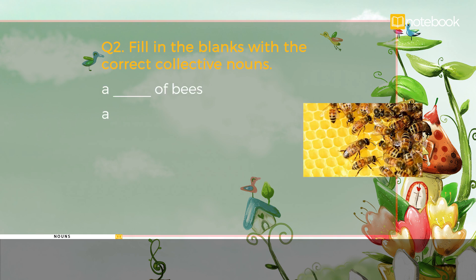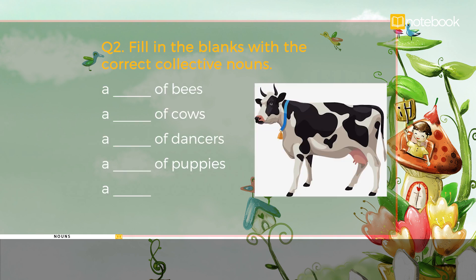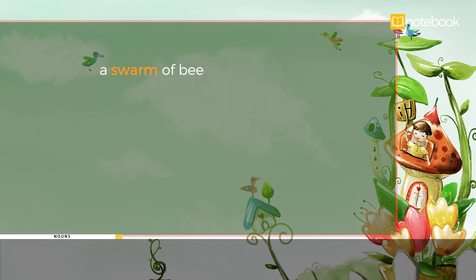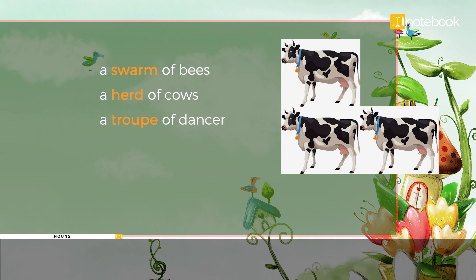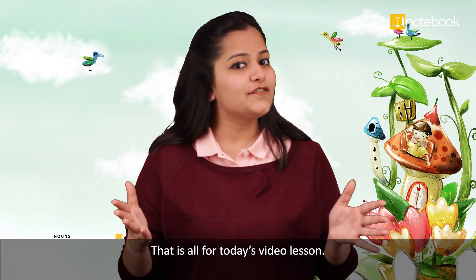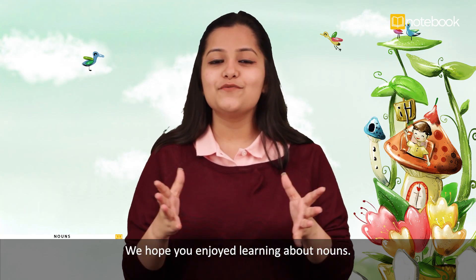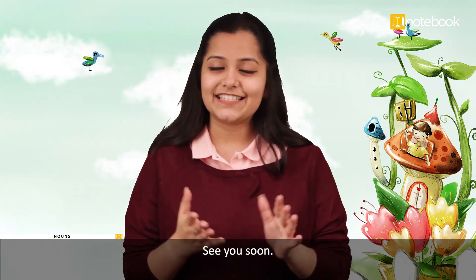Question: fill in the blanks with the correct collective nouns — a blank of bees, a blank of cows, a blank of dancers, a blank of puppies, a blank of musicians. Answers: a swarm of bees, a herd of cows, a troop of dancers, a litter of puppies, a band of musicians. That is all for today's video lesson. We hope you enjoyed learning about nouns. See you soon!